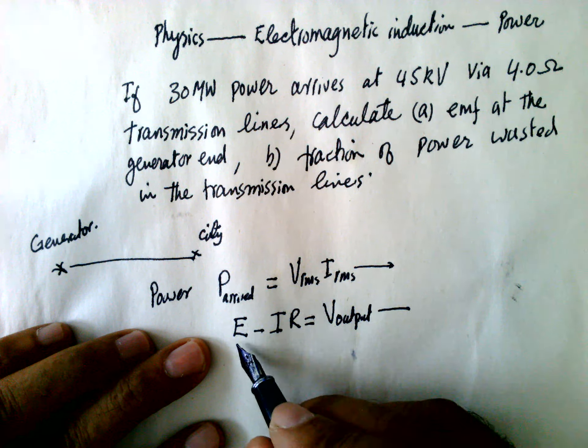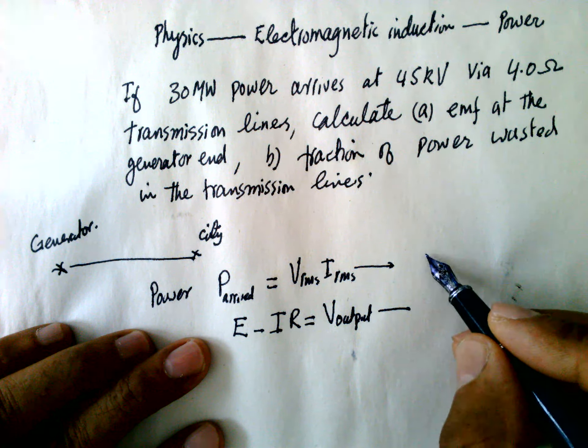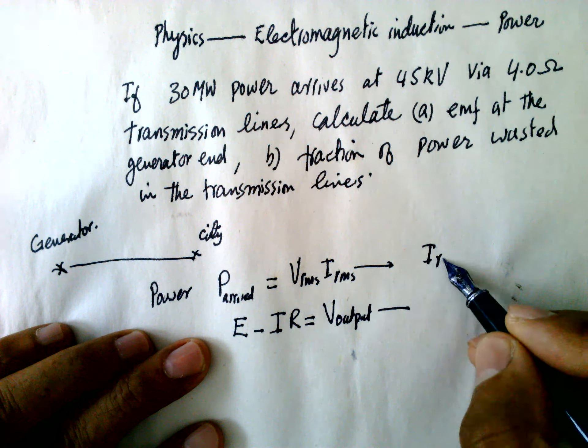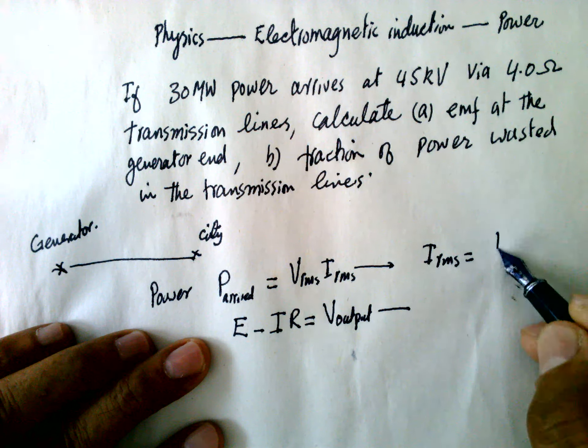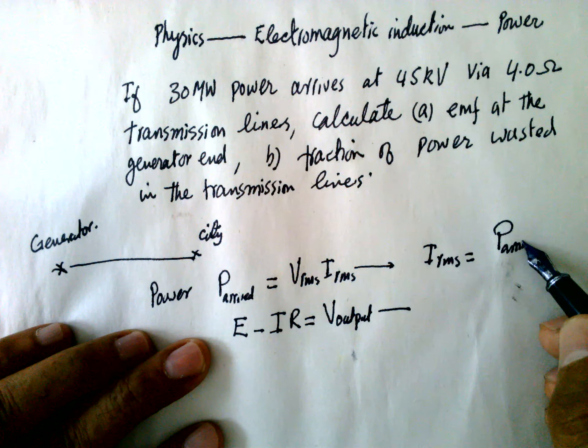So combining these two we can solve for EMF. From this one we have I_rms is equal to power which arrives over V_rms.